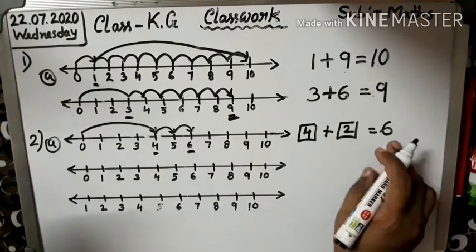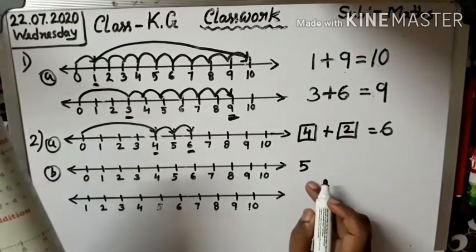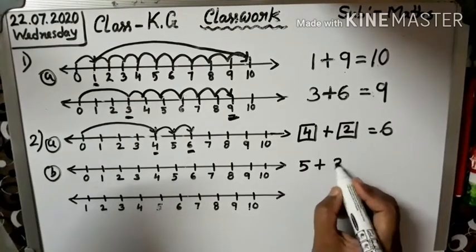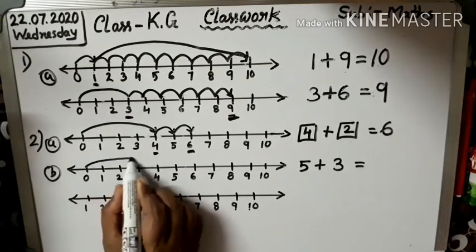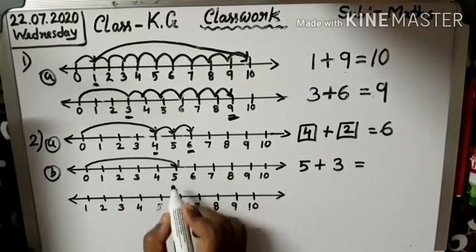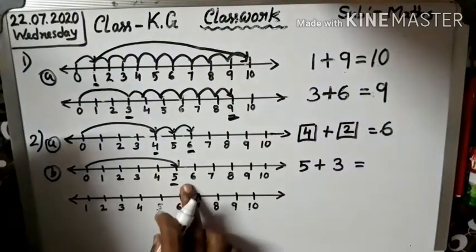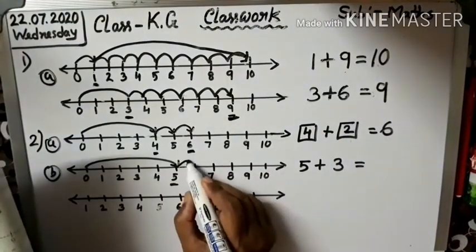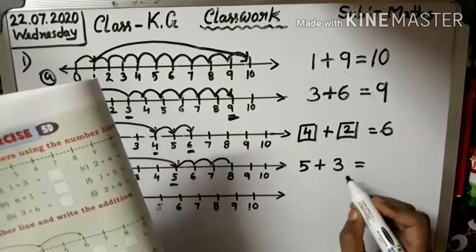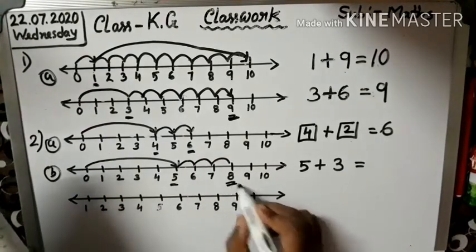Next, 5. B. Follow me. B: 5 plus 3. C. See, 0, 1, 2, 3, 4, 5. So, 5. Jump. Jump. 8. So 1, 2, 3 — that's why I write here number 3 is equal to make answer 8.